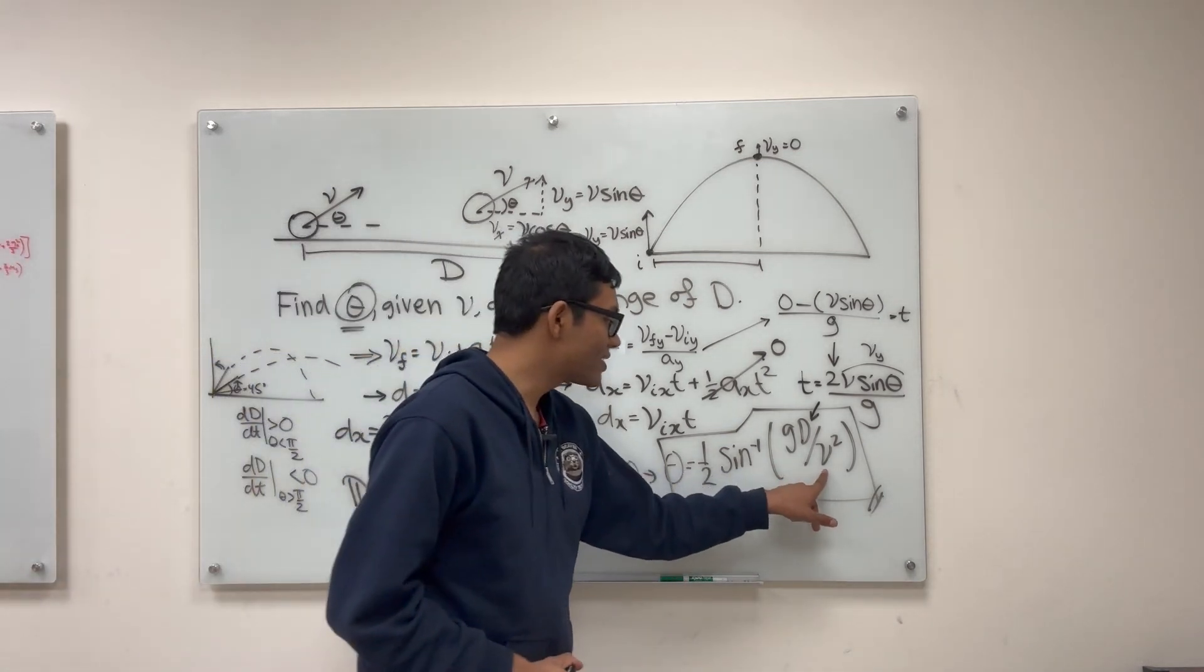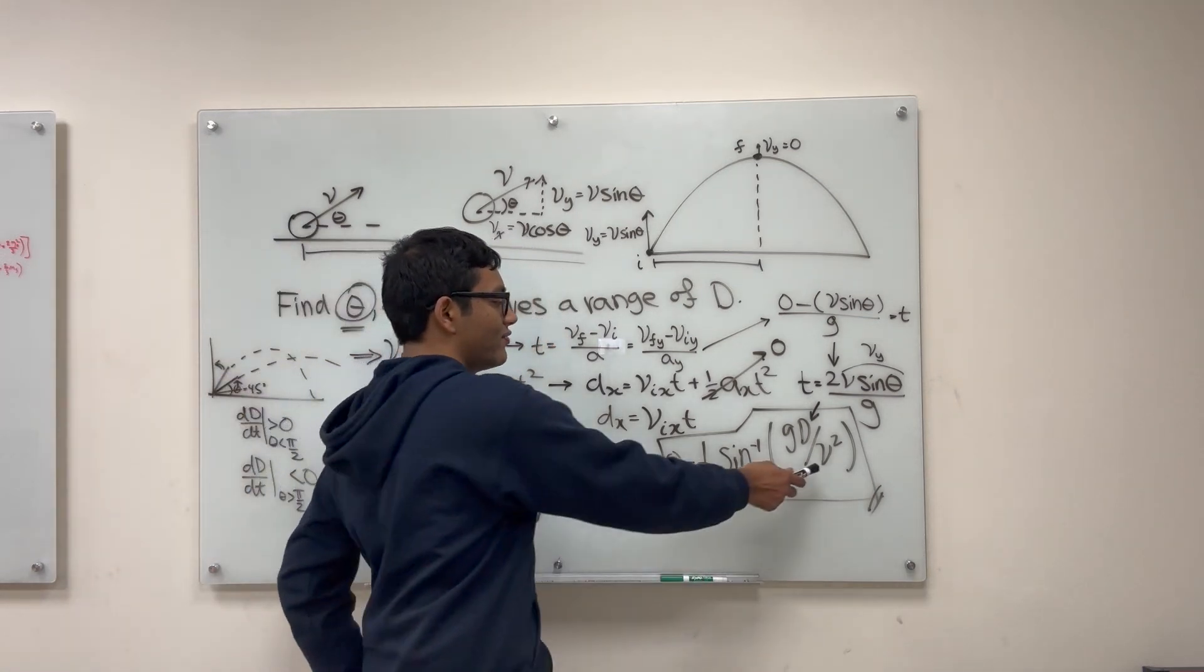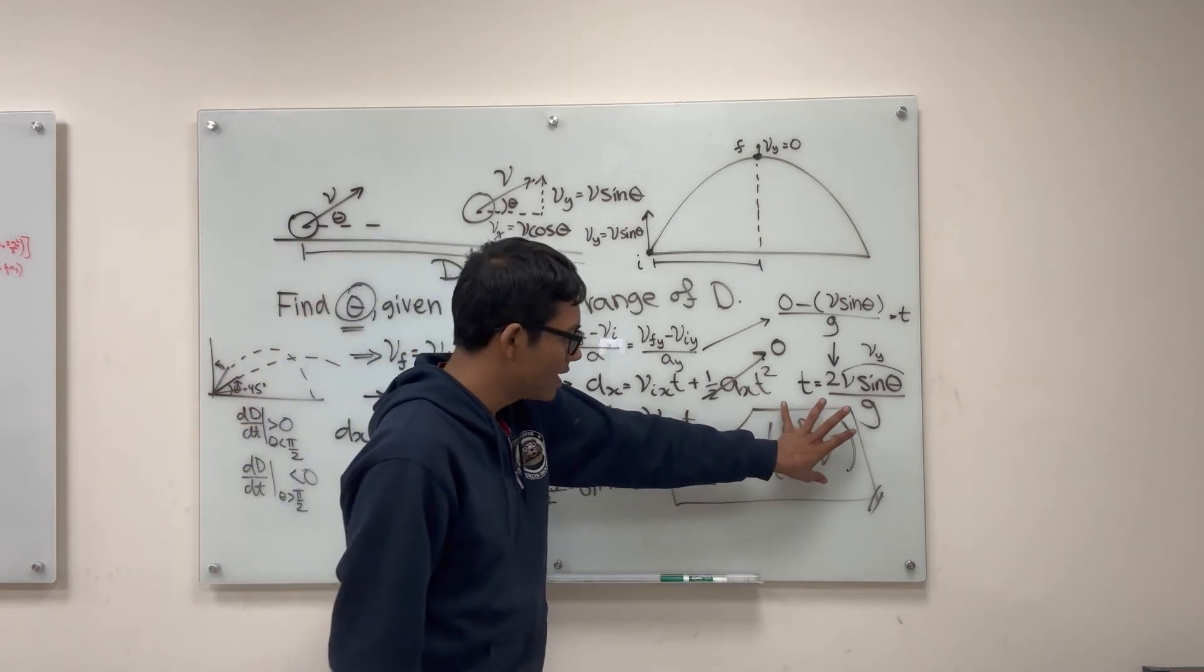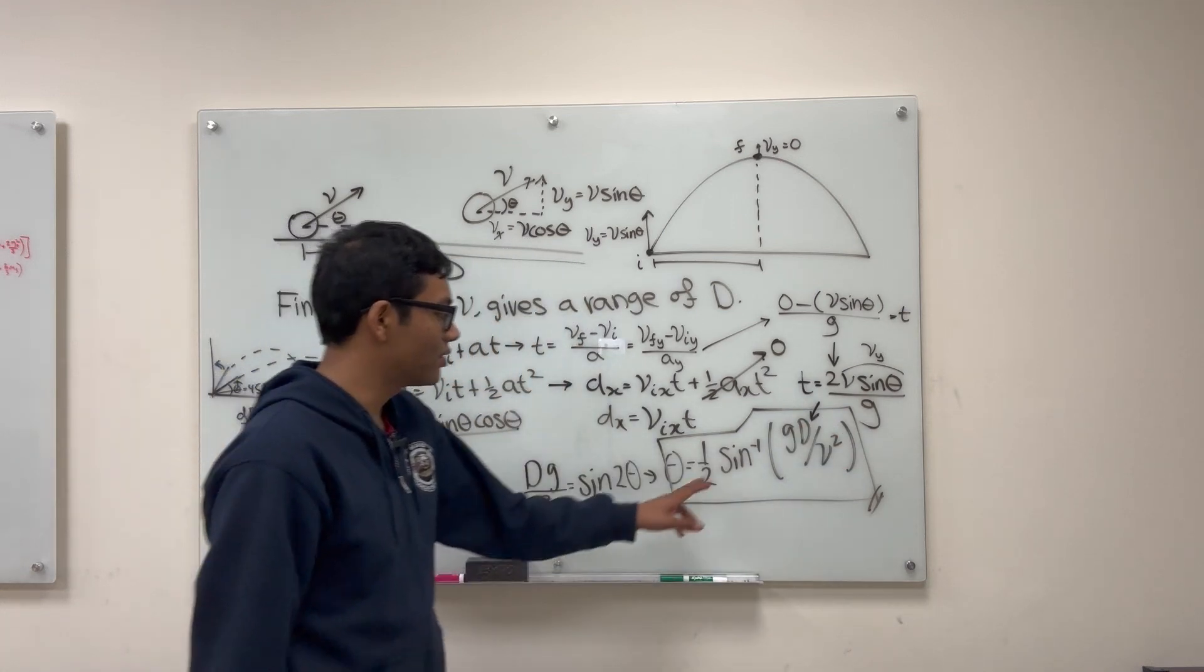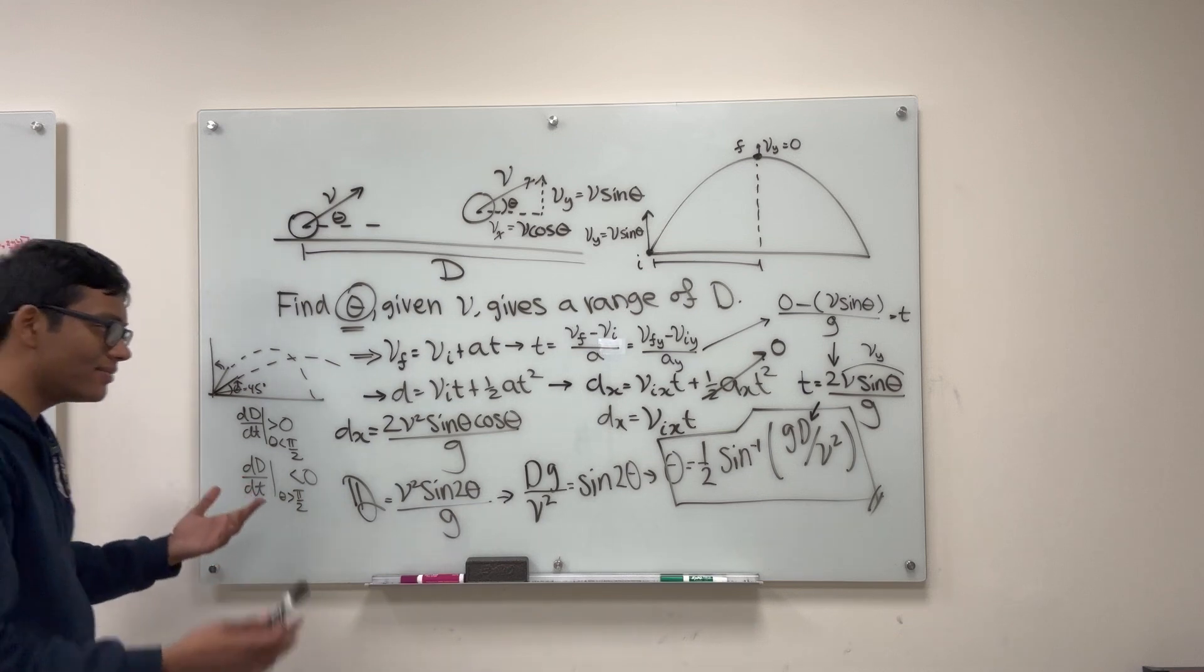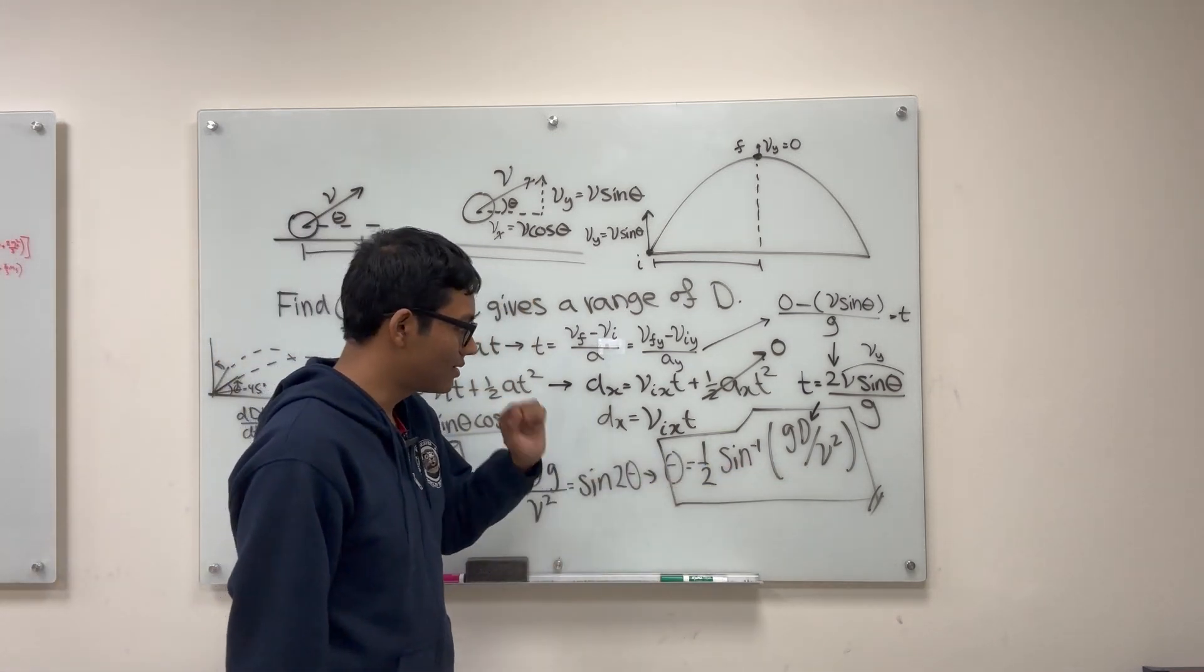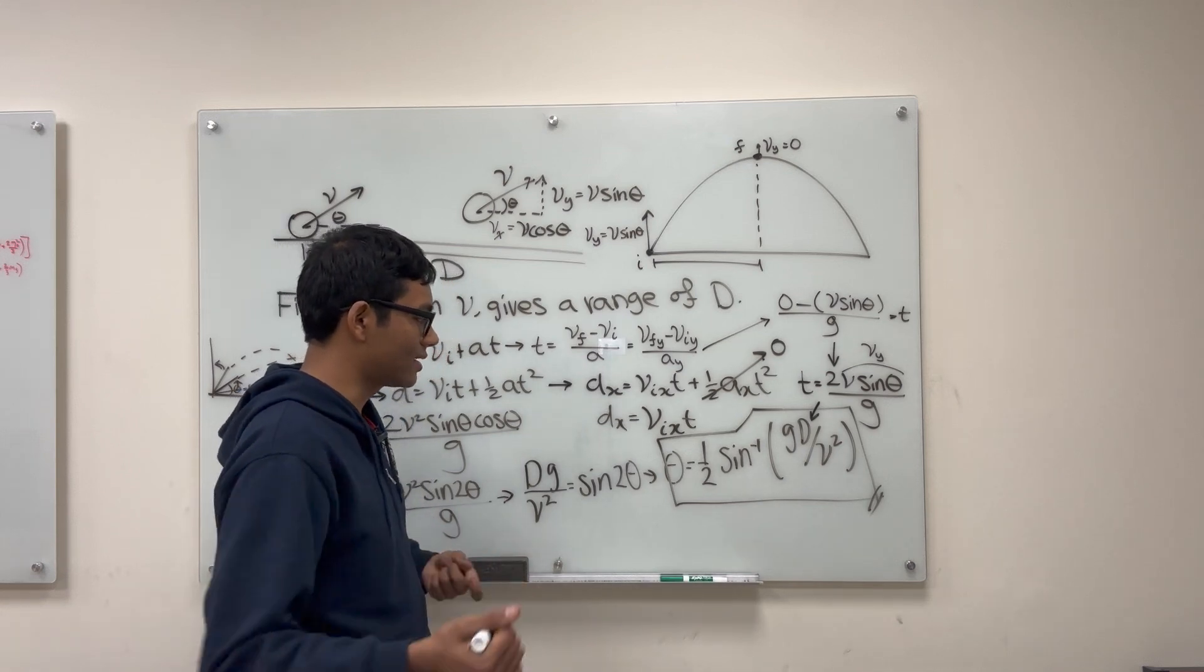What about v squared? Now that one seems to be pretty straightforward. If we increase v squared, we see that this argument decreases and so arc sine of this decreases and so it seems like if you have a greater v squared, then theta will change as expected.